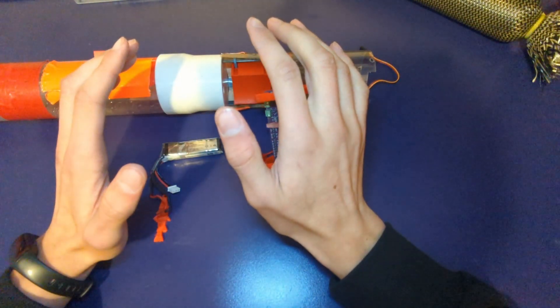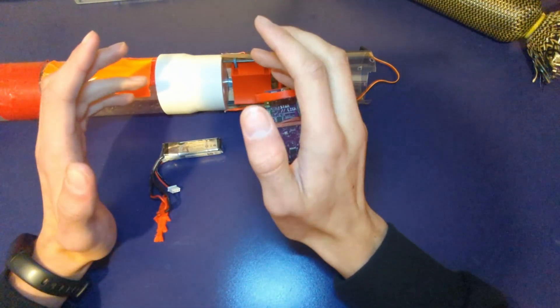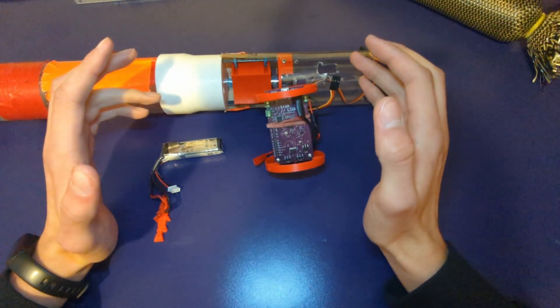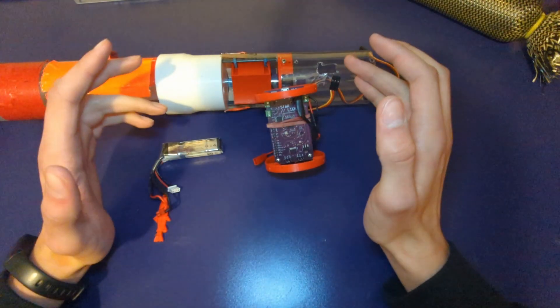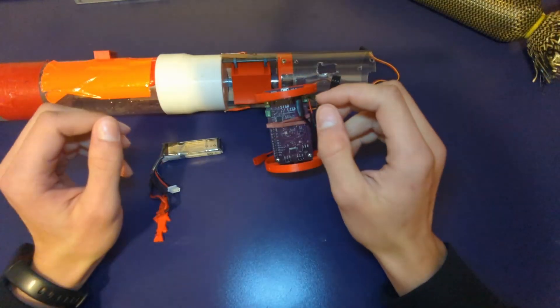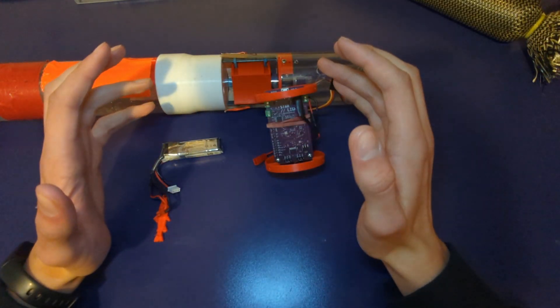Before I show you the onboard footage from the selfie stick, I want to talk about how the flight went. As you could probably tell from the videos, it was suboptimal. The parachute didn't really come out. You're probably wondering why that happened. It wasn't really a failure in the parachute systems.